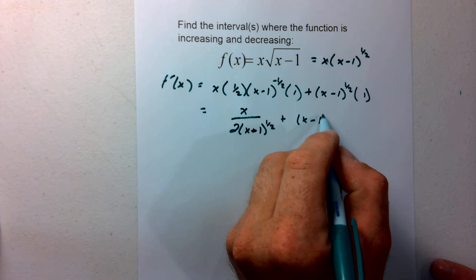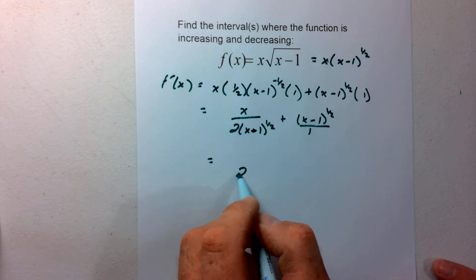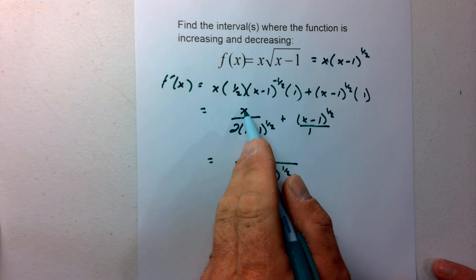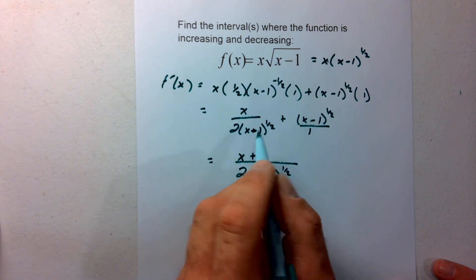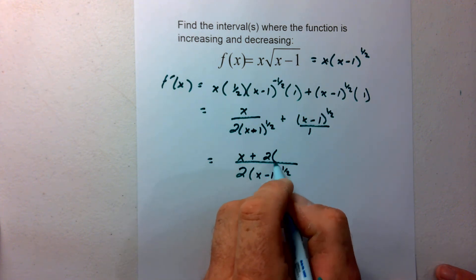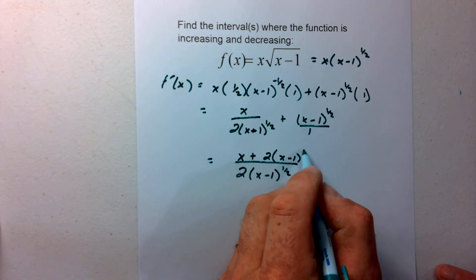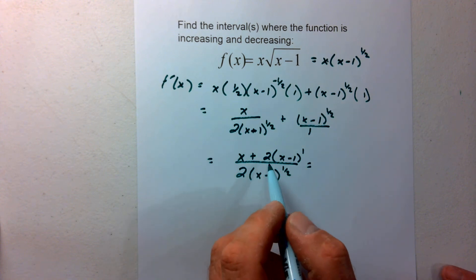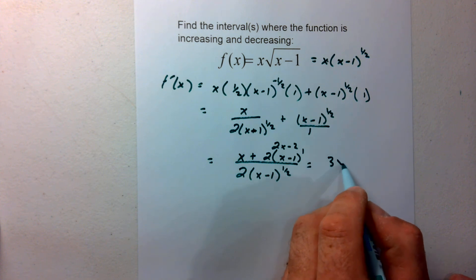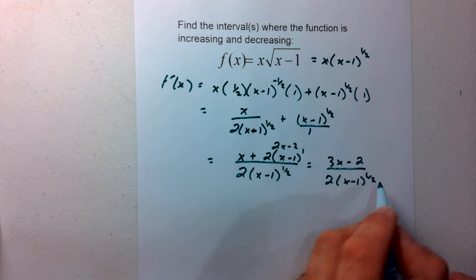To that we add the derivative of the first, which is 1, times (x minus 1) to the one half. Bringing the negative exponent to the bottom and finding a common denominator of 2 times (x minus 1) to the one half: the first term gives x, and the second term needs to be multiplied by 2 times (x minus 1) to the one half. Multiplying (x minus 1) to the one half by (x minus 1) to the one half adds exponents to give (x minus 1) to the first. Multiplying 2 through gives 2x minus 2, so we end up with 3x minus 2 over 2 times (x minus 1) to the one half.